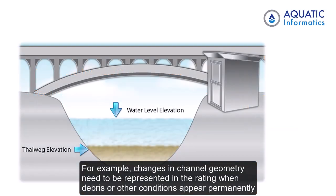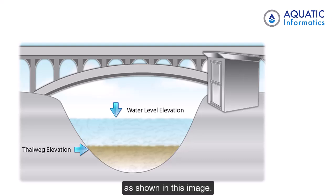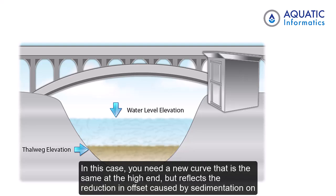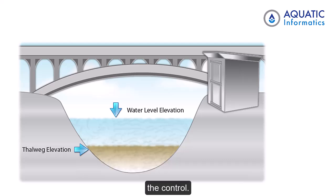For example, changes in channel geometry need to be represented in the rating when debris or other conditions appear permanently, as shown in this image. In this case, you need a new curve that is the same at the high end but reflects the reduction in offset caused by sedimentation on the control.